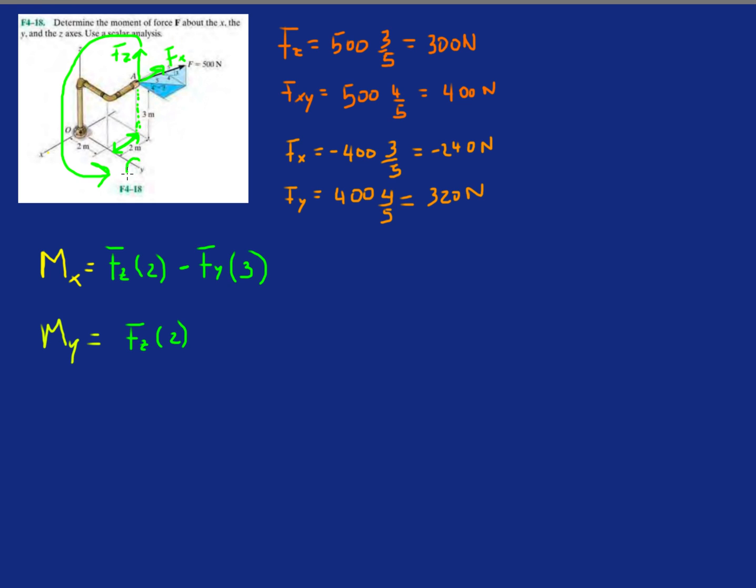So if you follow that with your fingers, you should get the thumb pointing towards the y. So it's positive. And now FX would be negative FX, and a distance FX has to be projected down. It's got to be three meters as well.